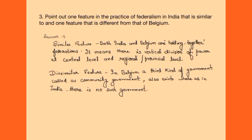The major difference between holding together and coming together federation is that in coming together federation, power sharing between central and state governments is generally equal. But in holding together federation, the central government is more powerful and there is unequal power sharing among different states. For the different feature — in Belgium, a third kind of government called community government also exists, whereas in India there is no such government. In community government, only people of a particular community can vote and choose their leader.